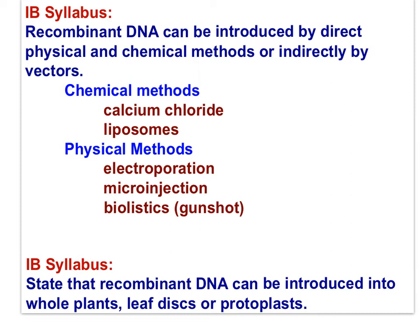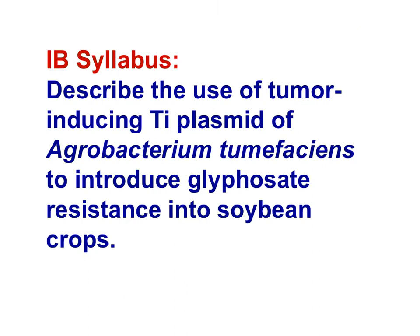To recap all these methods by which we introduce foreign DNA into host cells: recombinant DNA can be introduced by direct physical and chemical methods, or indirectly by vectors — plasmids and viruses. Recombinant DNA can be introduced into whole plants, leaf discs, or protoplasts. Now let's shift focus to two new IB syllabus statements on applications. The first: describe the use of the tumor-inducing Ti plasmid of Agrobacterium tumefaciens to introduce glyphosate resistance into soybean crops.